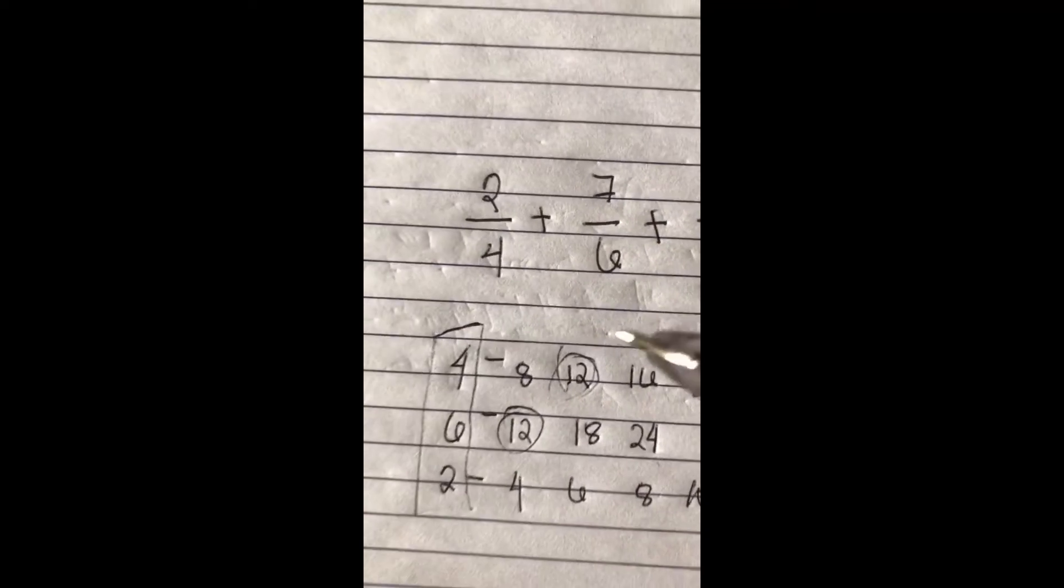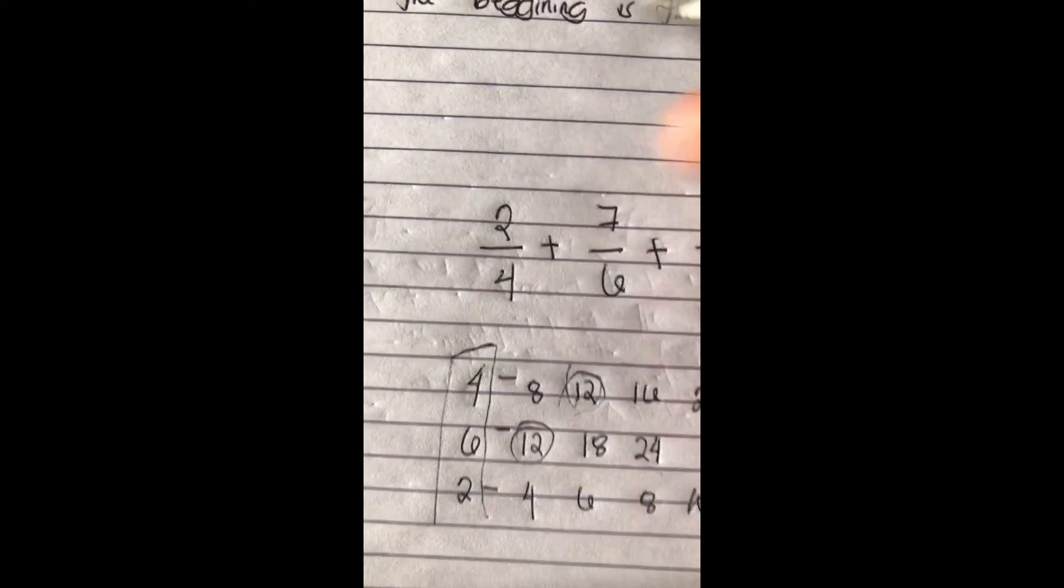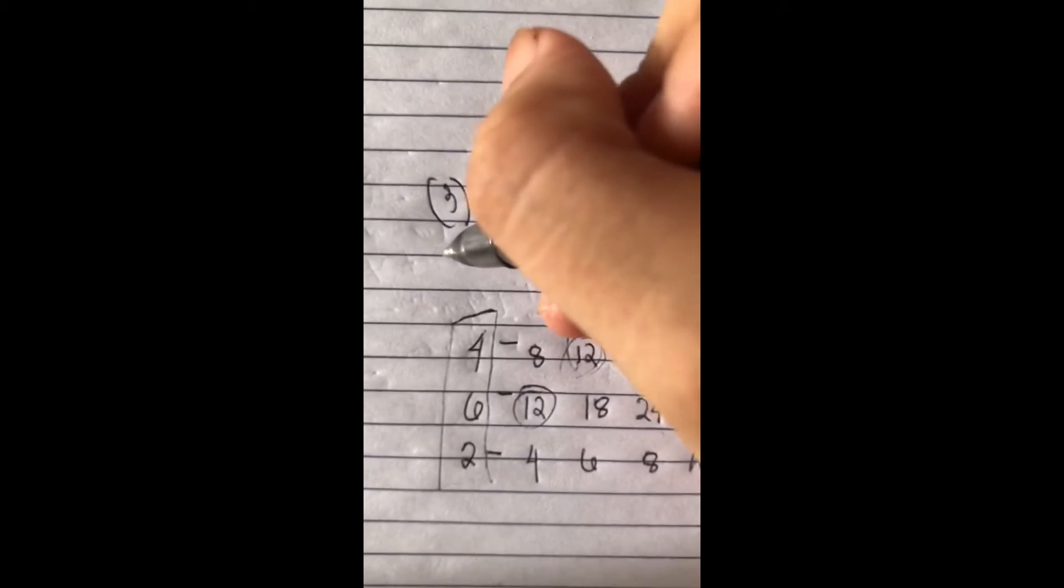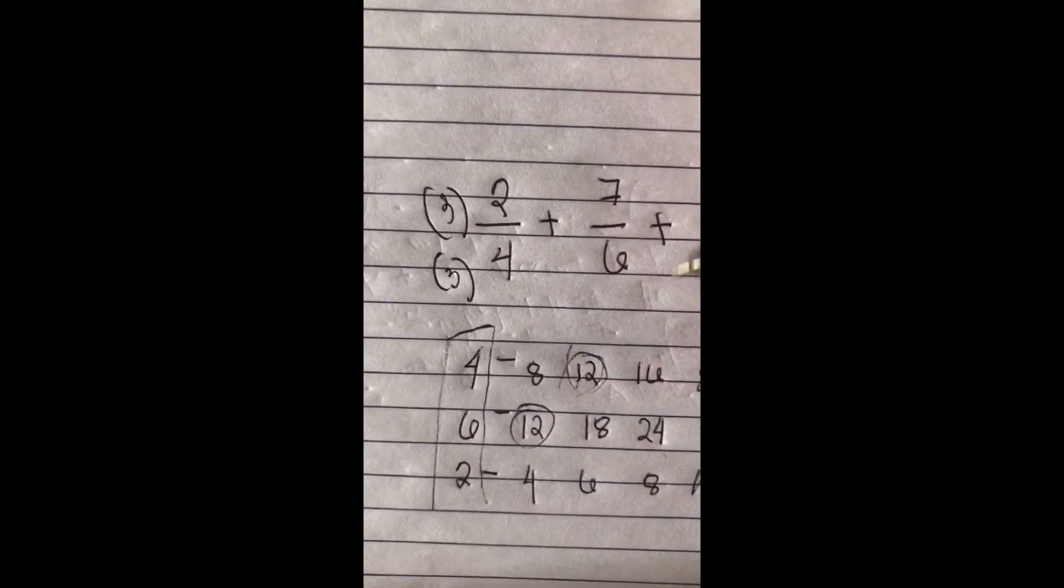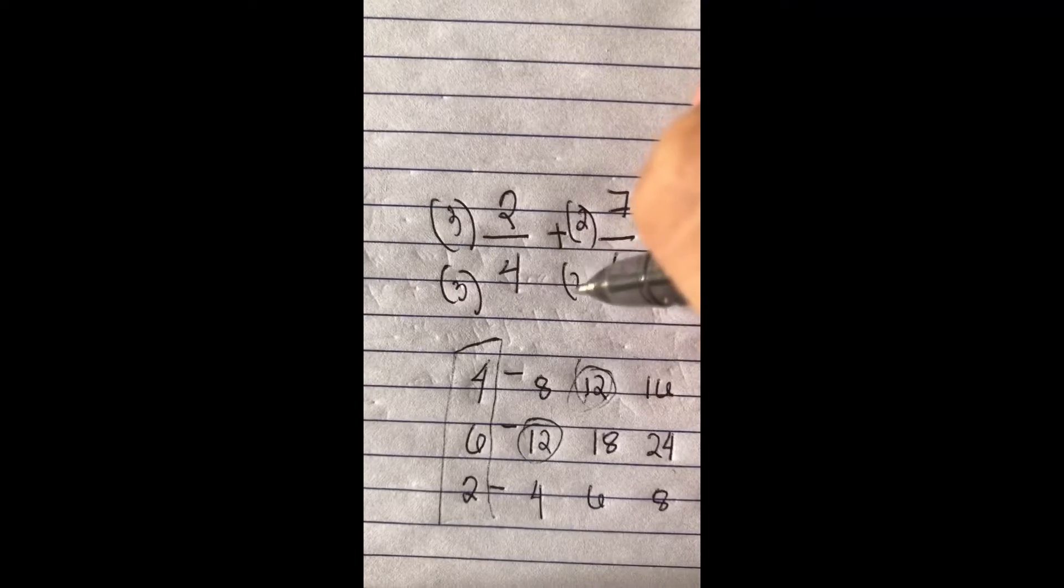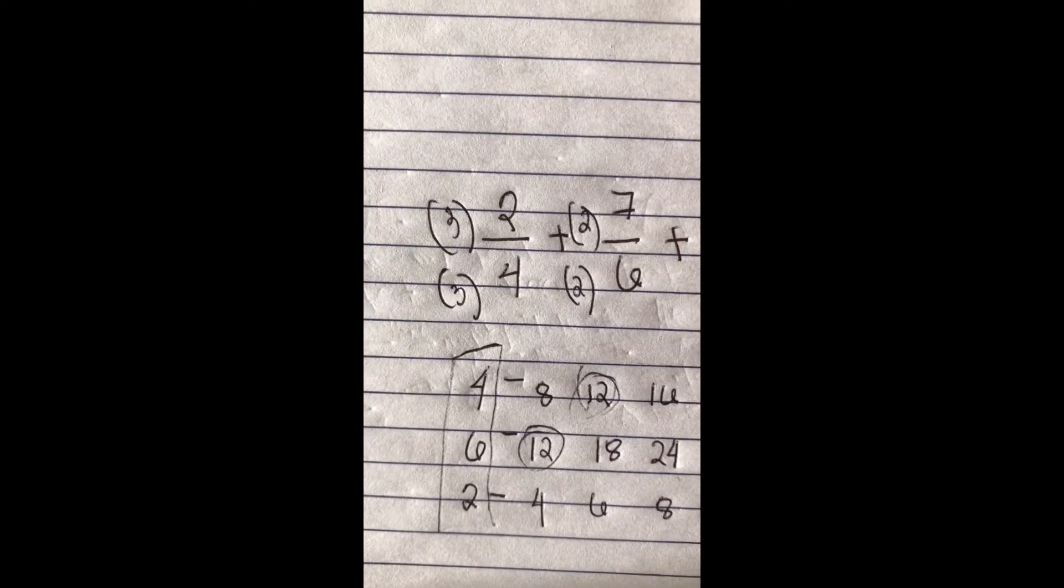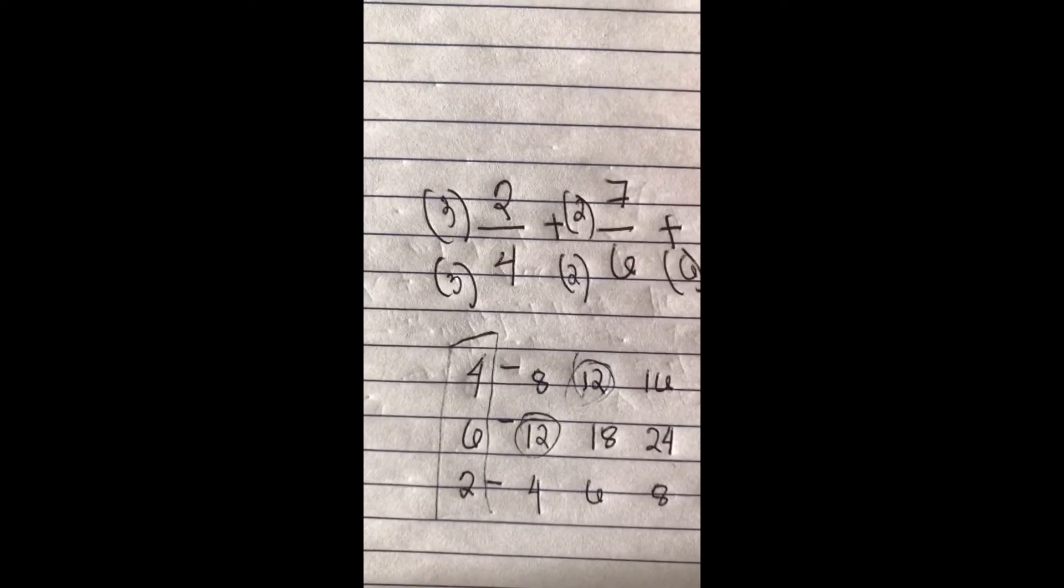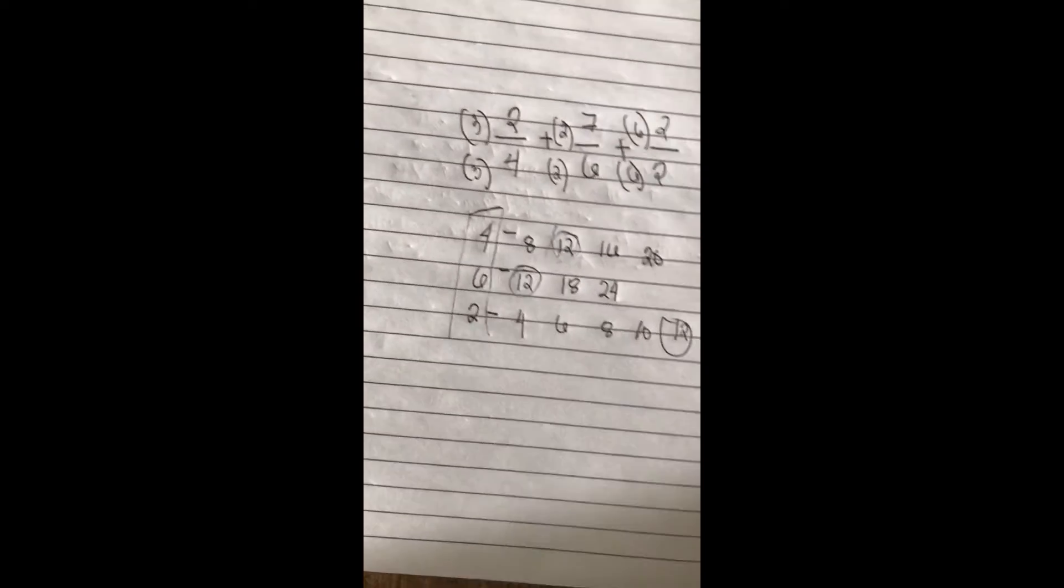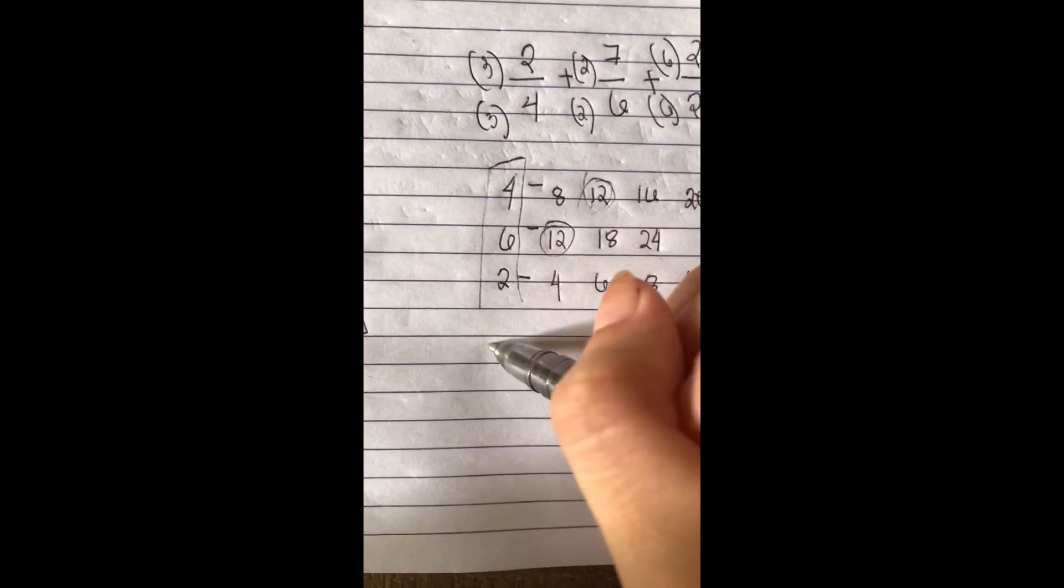All we need to do is 12 divided by the denominators. So 12 divided by 4, that is 3. 12 divided by 6, that is 2. And 12 divided by 2, that is 6.